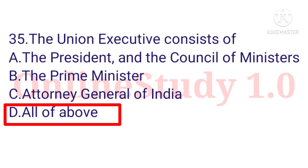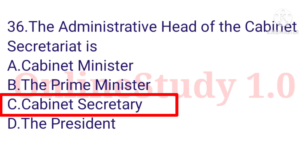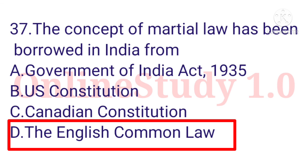Question number 35: The union executive consists of the President, the Prime Minister, and the Attorney General of India. The administrative head of the cabinet secretariat is the Cabinet Secretary. Question number 37: The concept of martial law has been borrowed in India from the English common law.